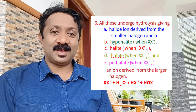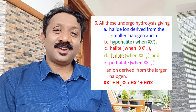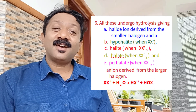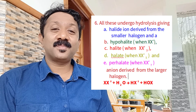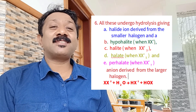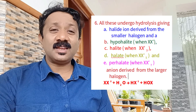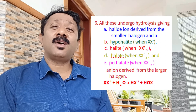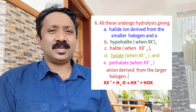The hydrolysis products depend on the type: XX' gives hypohalite; XX'-3 gives halite; XX'-5 gives halic acid; XX'-7 gives perhalate. This summarizes the hydrolysis products of interhalogen compounds. Okay?